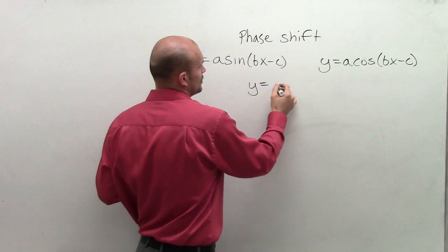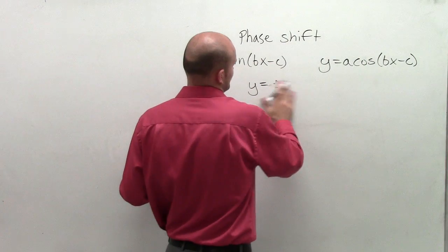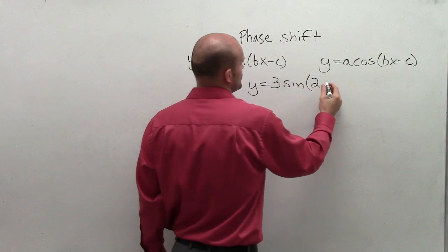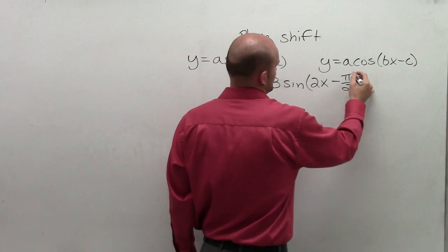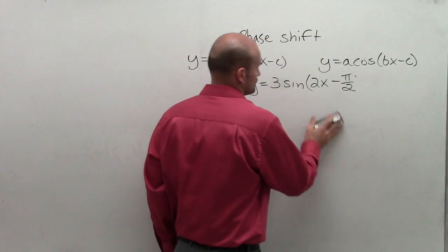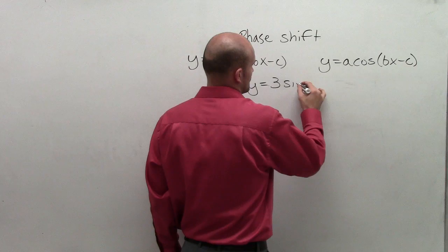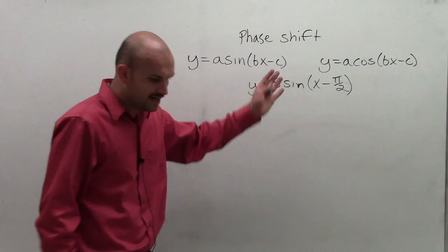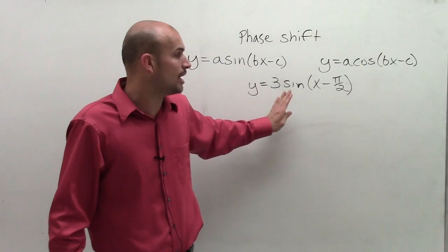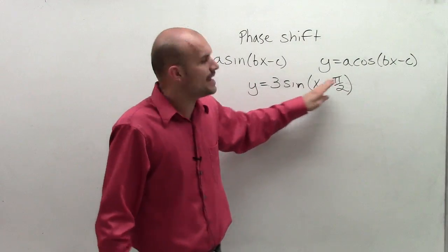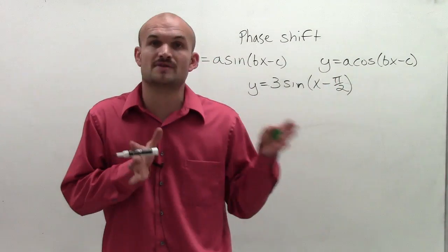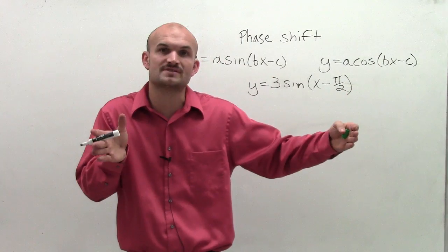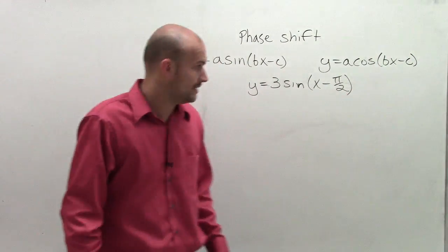Let's say we have y equals 3 sine of x minus pi over 2. Now, when looking at a function like this, we know that 3 is going to be our amplitude. We look at x minus pi over 2, and just like we've talked before, since that's negative, that's going to tell us to shift to the right. So we're going to take our whole sine function and shift it pi over 2 units.